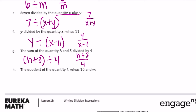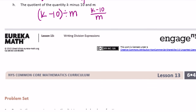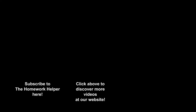The quotient of the quantity k minus 10 divided by m: we keep k minus 10 together in parentheses, giving (k − 10) ÷ m, or as a fraction, k minus 10 over m.